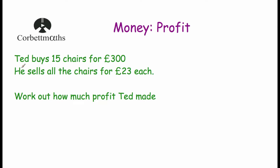So our first question says: Ted buys 15 chairs for £300 and he sells the chairs for £23 each. Work out how much profit Ted made. In this question, we know that Ted buys 15 chairs and he buys them for £300 — that's how much money he spent. And he sells each of the chairs for £23 each.